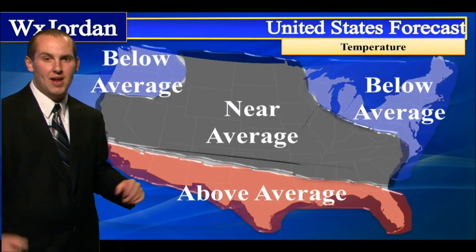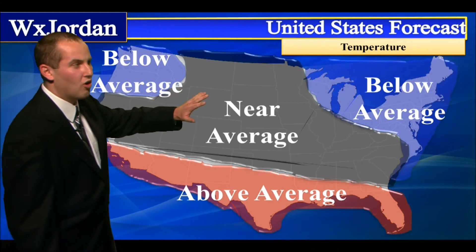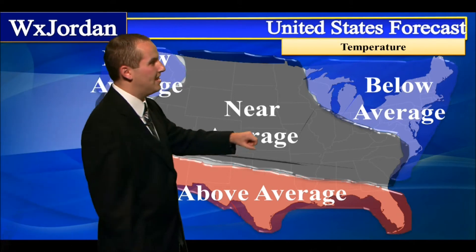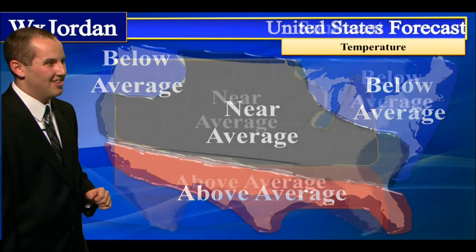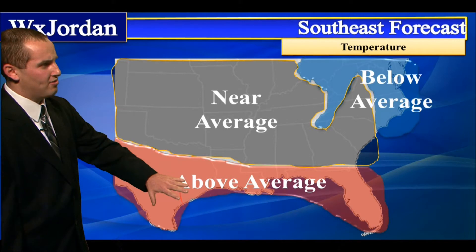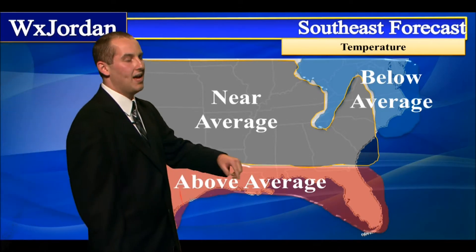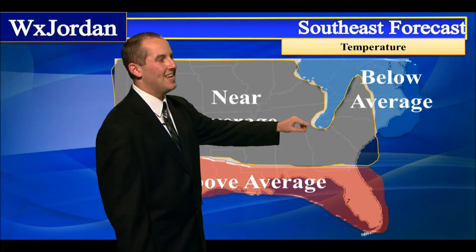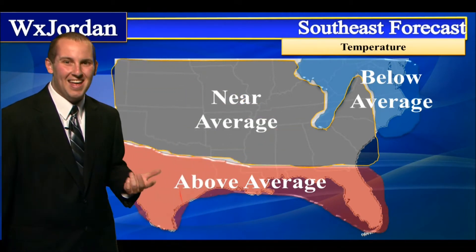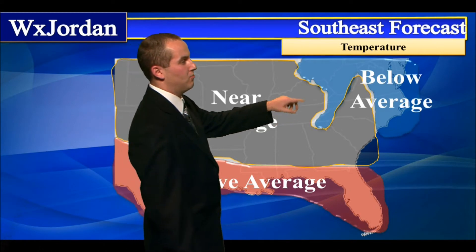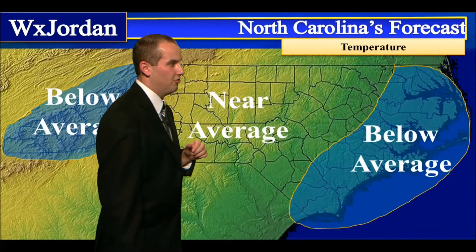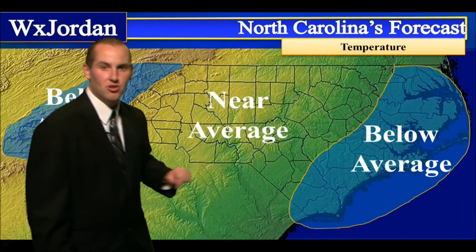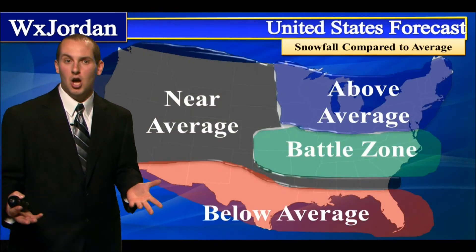Let's break it down for the United States: near average temperatures across most of the country, with below average temperatures in the Pacific Northwest and Northeast, and above average temperatures in the Southeast and Southwest — so above average through Texas, Louisiana, all the way down into Florida. Near average temperatures through the whole Great Plains into the Southeast, and then below average temperatures in the mountains of North Carolina, with near average temperatures in the center of North Carolina.